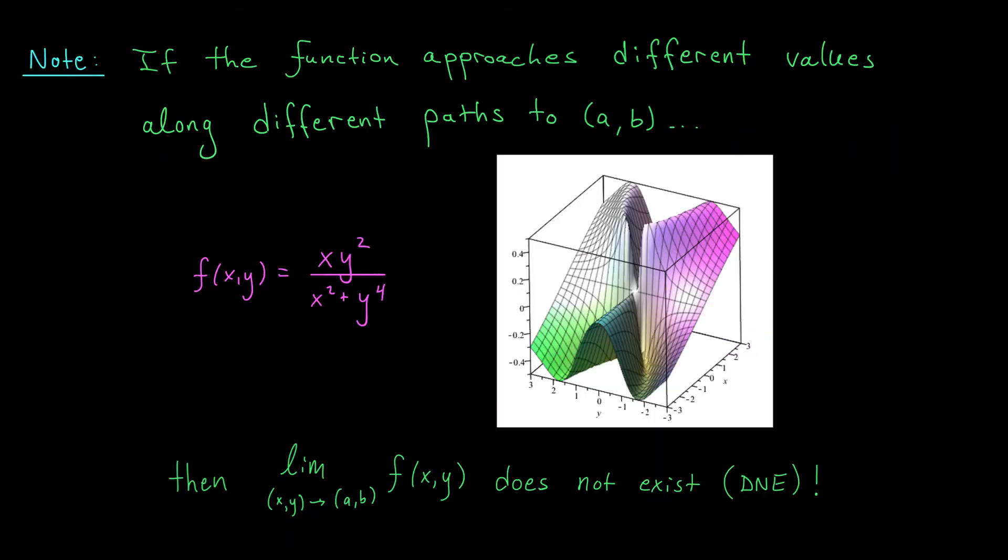Now you might be wondering, what does a multivariable function even look like if it's approaching different values along different paths to (a,b)? I remember finding visualizing such a function pretty difficult when I was a student. Well, here is a concrete example. The function f(x,y) equals xy² over x² plus y⁴. The graph of this function is shown here. Looks pretty complicated, right?